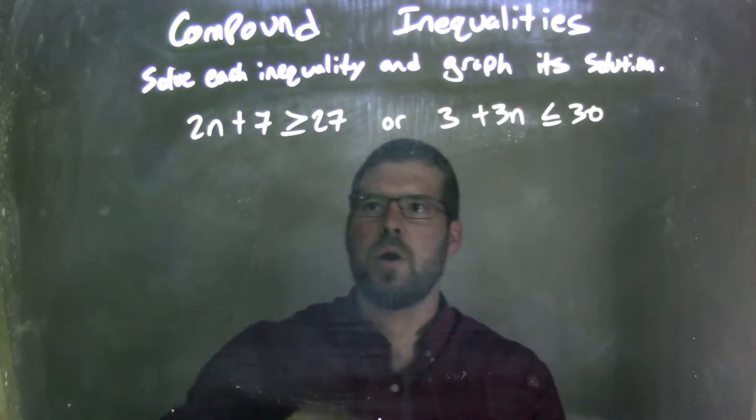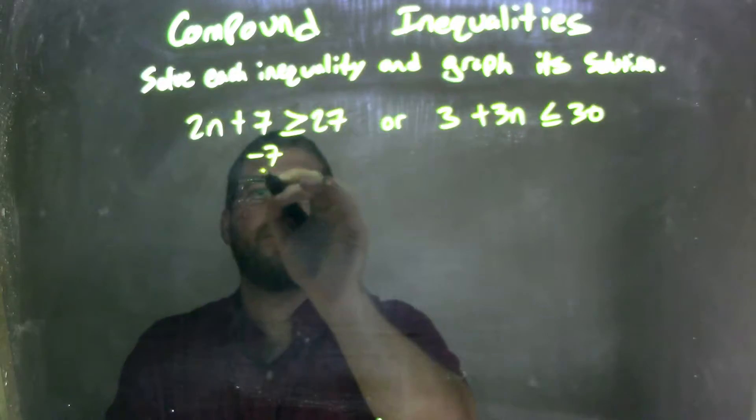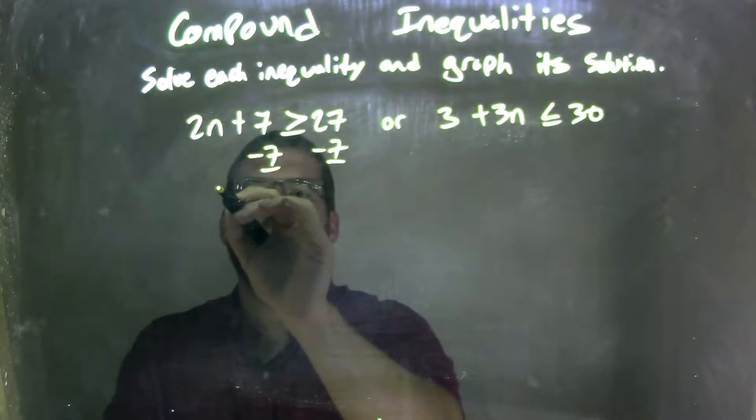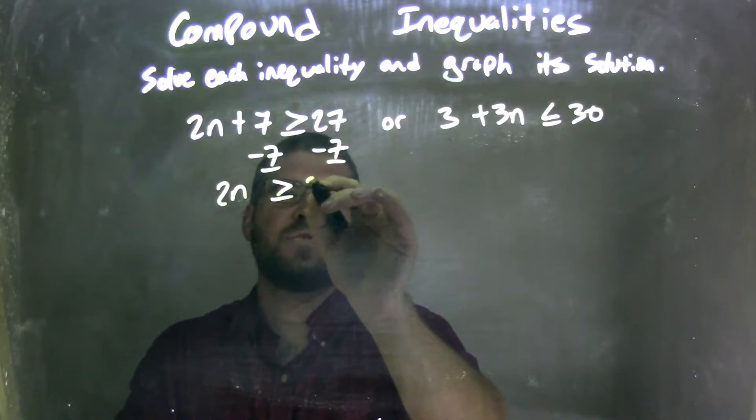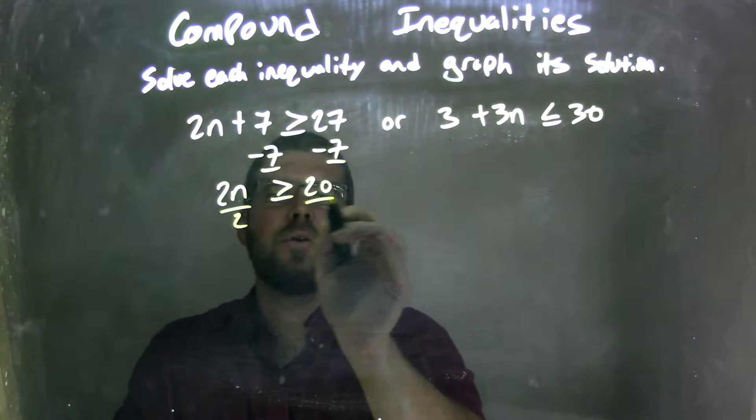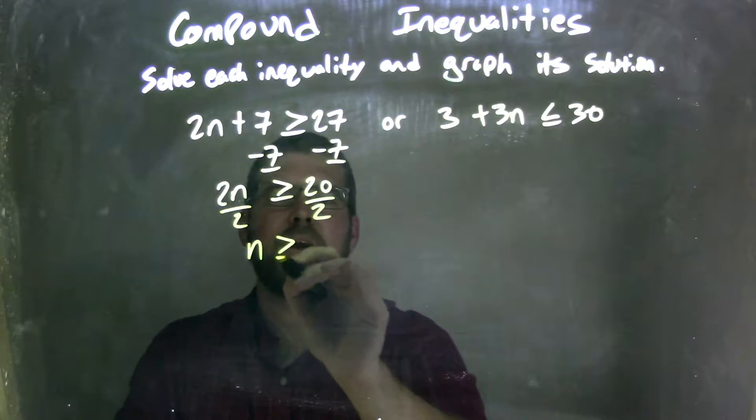Well, first thing, I'm going to solve each inequality individually. So I'm going to subtract 7 from both sides here, leaving me with 2n is greater than or equal to 27 minus 7 is 20. I then divide by 2 on both sides, giving me n by itself is greater than or equal to 10.